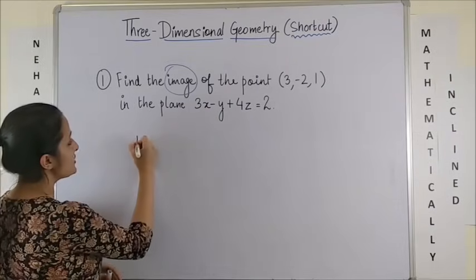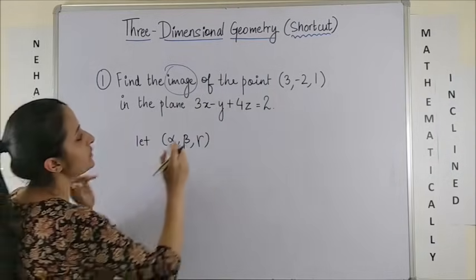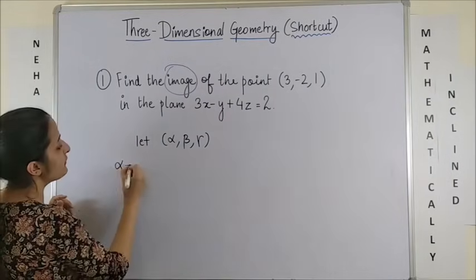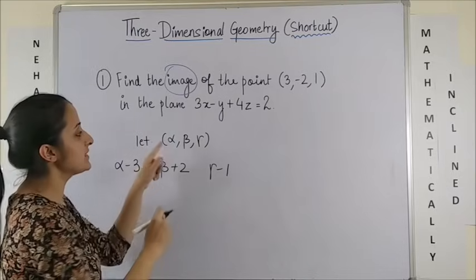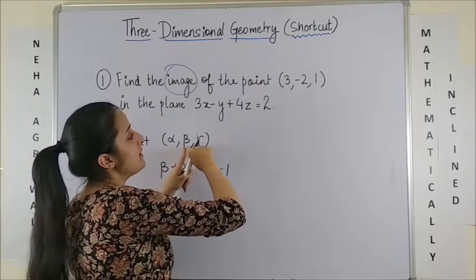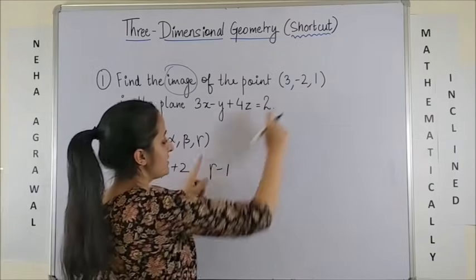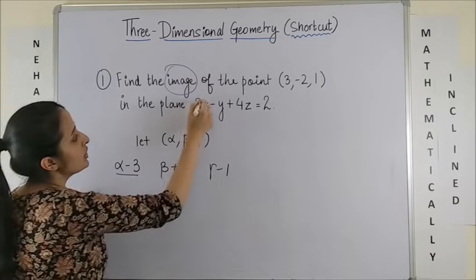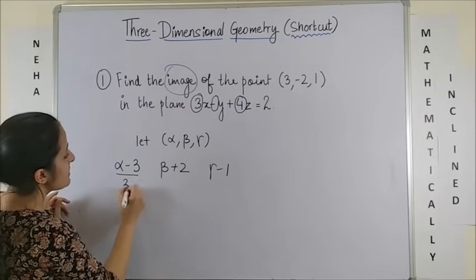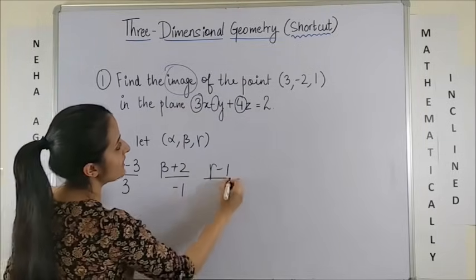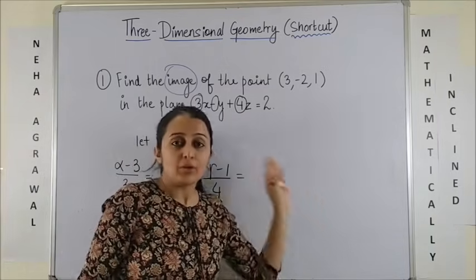Suppose you say that the image be alpha, beta, gamma — which you have to find. All you need to do is write: alpha minus 3, beta plus 2, and gamma minus 1. Basically, I am just subtracting: alpha minus 3, beta minus (minus 2) makes it beta plus 2, gamma minus 1. For your denominator, you just take the coefficients of x, y, and z. So this becomes over 3, over minus 1, and over 4.